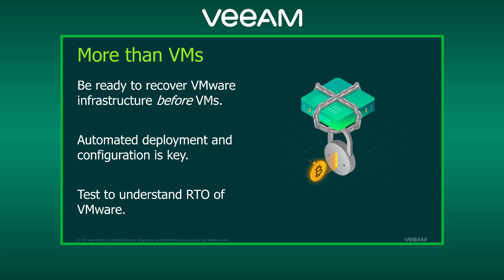A lot of people deploy VMware once and never really need to touch it again. But what happens if you have to start over? That's where automated deployment and configuration testing comes in. You don't necessarily need extra hardware — you can test VMware deployment nested, running ESXi hosts as VMs. We really need to understand the RTO of VMware itself. If I have four clusters with 32 ESXi hosts, how long does it take to rebuild that infrastructure, rebuild vCenter, before I can start restoring VMs from backup? That ties into our overall application RTO.